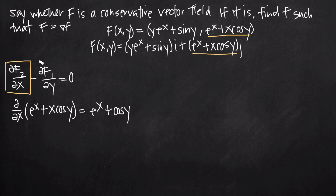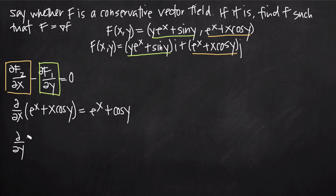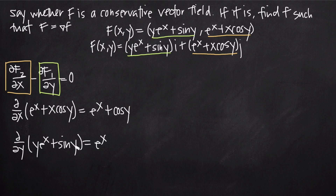For the partial derivative of F sub 1 with respect to y, we look at the coefficient in front of the i term: y e to the x plus sine y. Taking the partial derivative with respect to y — holding x as a constant — e to the x acts like a constant coefficient on the first degree y term, giving us e to the x. The derivative of sine y with respect to y is plus cosine y.